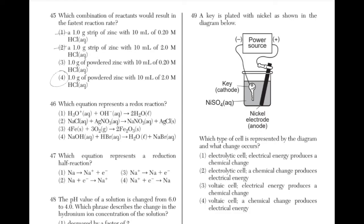Which equation represents a redox reaction? In a redox reaction, electrons are transferred. The answer is 3 because electrons can be seen as being transferred — on the reactant side of the equation, oxygen has a subscript of 2, but on the product side it has a subscript of 3, symbolizing that electrons were transferred and that it could be modeled through the crisscross diagram.